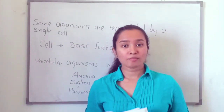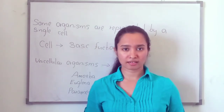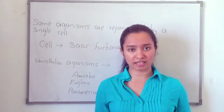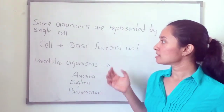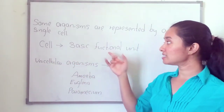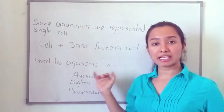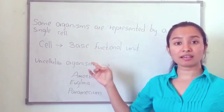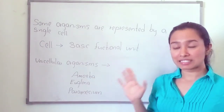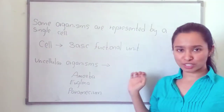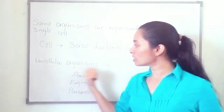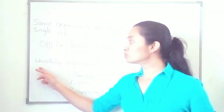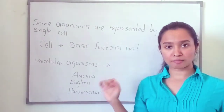Most organisms are made up of numerous cells. But there are some organisms that are represented by a single cell — only one cell. That means a single cell acts as the basic functional unit. Previously, we discussed that the cell is a basic structural unit. So we can say the cell is the structural and functional unit of organisms. The organisms represented by a single cell are called unicellular organisms.